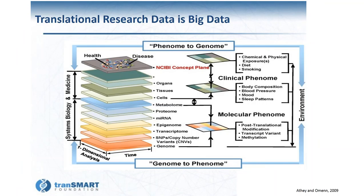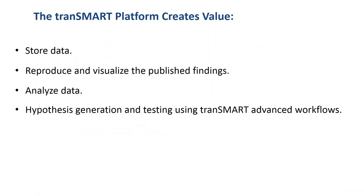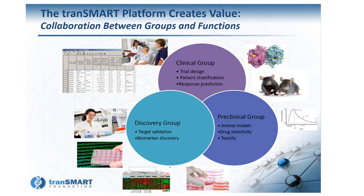TransMART is a data warehouse with data analysis and data exploration functions accessed through a web interface. It brings different types of data from phenome to genome together, integrated in one platform. Clinical and omics data are linked and can be analyzed within the platform together. This allows us to use TransMART to store data as a data repository or library, reproduce and visualize the published findings, analyze data for target validation, biomarker discovery, toxicity, etc., and to generate hypotheses and test them using TransMART Advanced Workflows. TransMART also allows us to combine private data with public data — basically anything can be loaded onto TransMART.